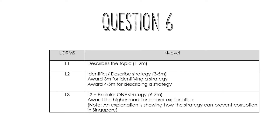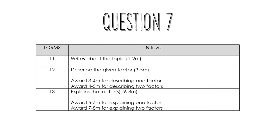This is the marking scheme for question 6. We are looking at just explaining one strategy or one reason, and that can give you as high as 6 to 7 marks provided that you link properly. For question 7, you have to give two factors and explain both factors to get the higher marks.